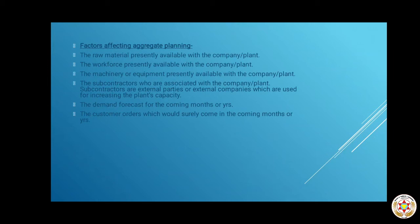The fourth factor is subcontractors who are associated with the company. Subcontractors are external parties or companies used for increasing the plant's capacity. For example, if your plant's capacity is 1000 kg of finished goods per month but market demand is 1200, then the remaining 200 will be outsourced to an external subcontractor. So we need to know which subcontractors are associated with our company before making the aggregate plan.